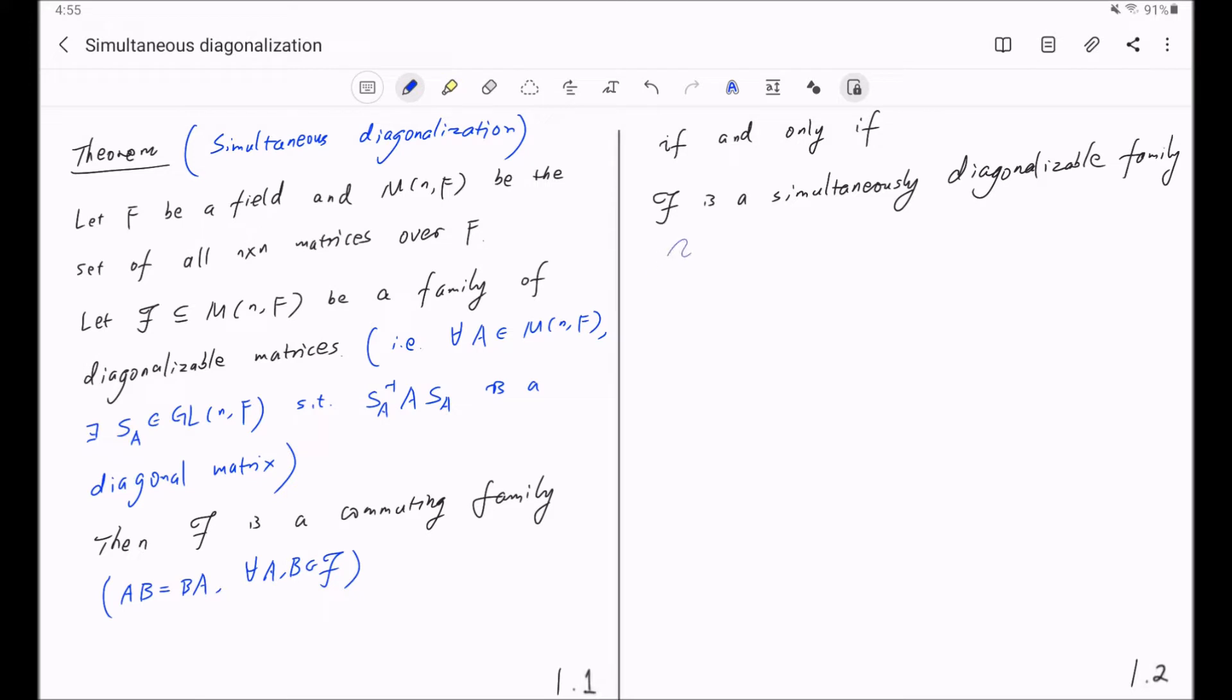By this we mean, there is a single S that is invertible, such that S inverse A S is diagonal for all A in F. Namely, this S does not depend on the specific choice of A in F, which is different from the notion of the matrix to be diagonalizable.